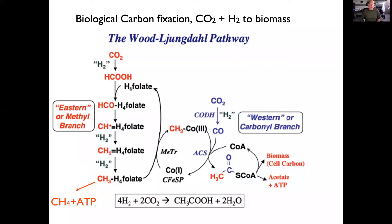Carbon fixation is a key aspect of the problem — building molecular complexity from simple precursors. Methanogens feed on CO₂ and hydrogen and follow the Wood-Ljungdahl pathway, also called the acetyl-CoA pathway. There is a methyl branch and a carbonyl branch. In the methyl branch, CO₂ is stepwise reduced down to a methyl group on the cofactor tetrahydrofolate, which can be cleaved off forming methane and ATP. Alternatively, the methyl group is transferred to a cobalt cofactor, brought to the carbonyl branch, where a carbonyl insertion reaction forms acetyl-CoA, which can generate ATP or feed into the TCA cycle to form biomass.